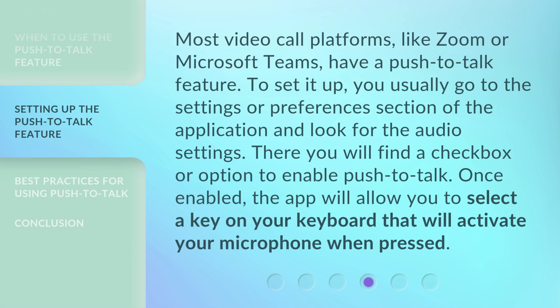Most video call platforms, like Zoom or Microsoft Teams, have a Push-to-Talk feature. To set it up, you usually go to the Settings or Preferences section of the application and look for the audio settings. There you will find a checkbox or option to enable Push-to-Talk. Once enabled, the app will allow you to select a key on your keyboard that will activate your microphone when pressed.